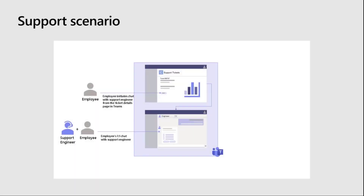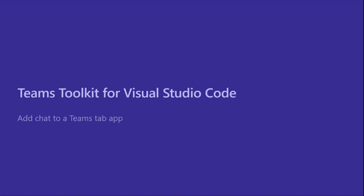Over the last few weeks we've talked about a support scenario. You might have a tab that helps manage support tickets, where an employee can see tickets and start a chat with the engineer assigned to their ticket. With a simple button on the page, you can start that chat and pre-populate the initial message with information about the support ticket — helping streamline that process and keeping everyone in Teams.